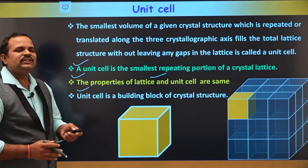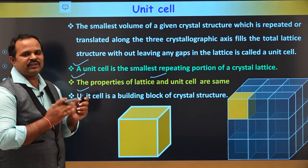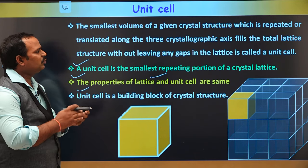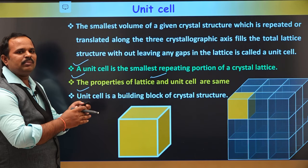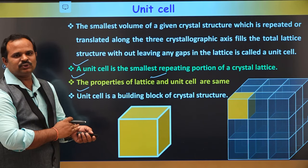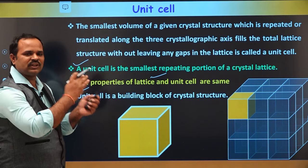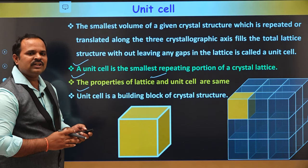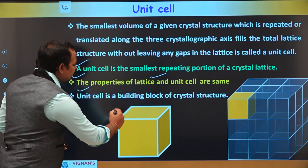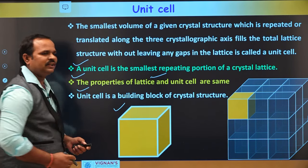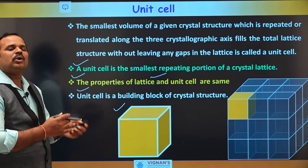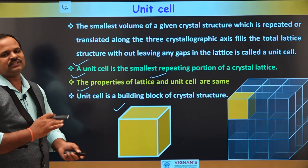So, unit cell means it is the smallest volume of a crystal which will be repeated along the x, y, z axes so that we can get a total crystal structure. And also, if we study the properties of the unit cell, that is exactly equal to the properties of the crystal structure.